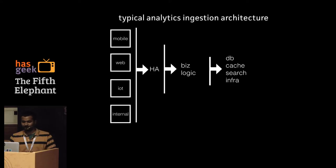Let's get back to a diagram. Your typical setup — whether a mobile app, web, or something else — you probably have a load balancer, some app servers, some APIs, and a set of databases, caches, search engines and so on. How many of you have a system like this running?